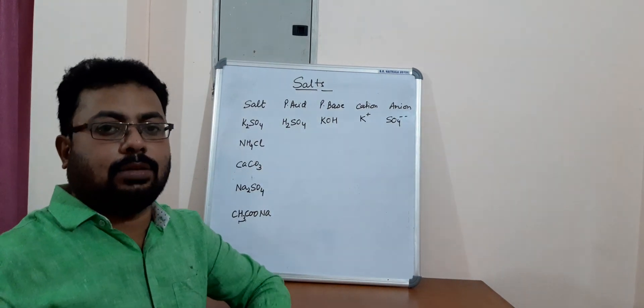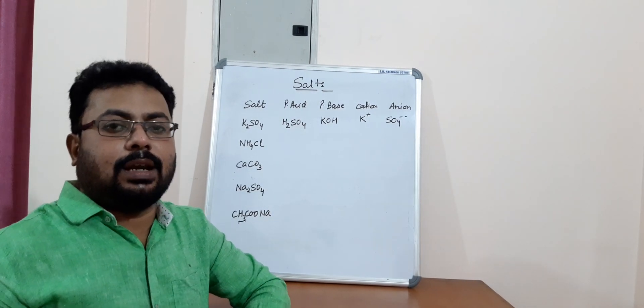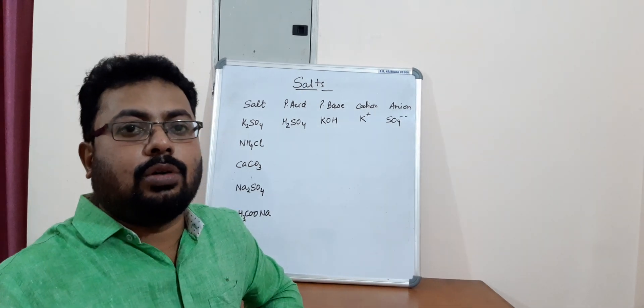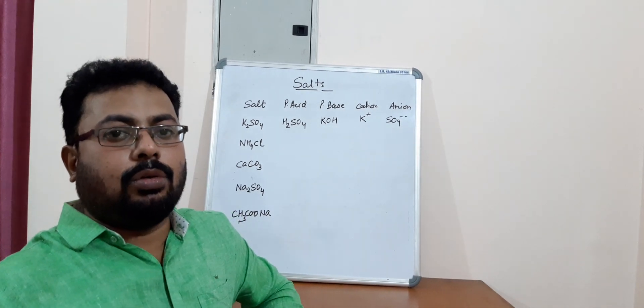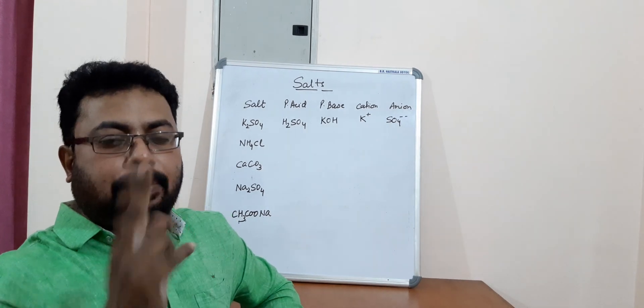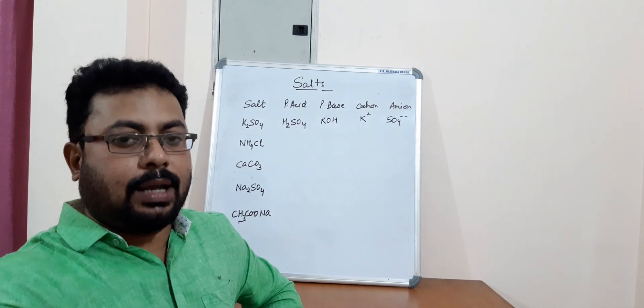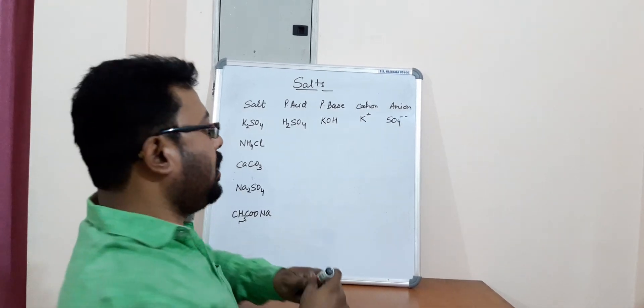Now let us talk about another salt that is NH4Cl. What is this salt known as? Yes, this is ammonium chloride. So there are two parts, ammonium and chloride. So ammonium is the cation and chloride is the anion.